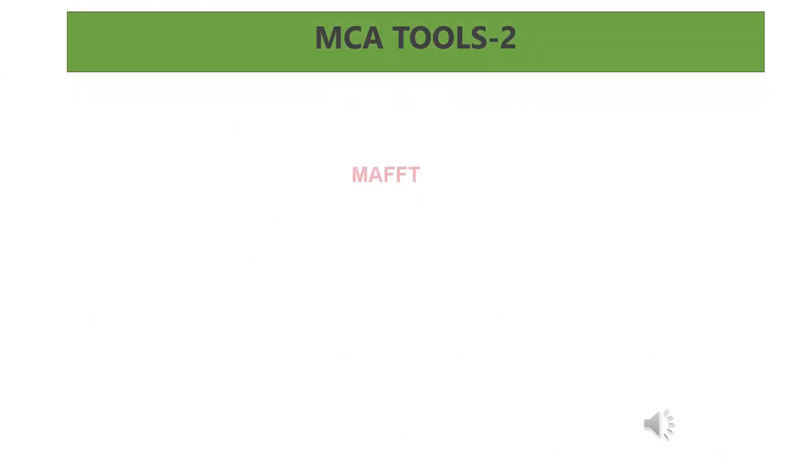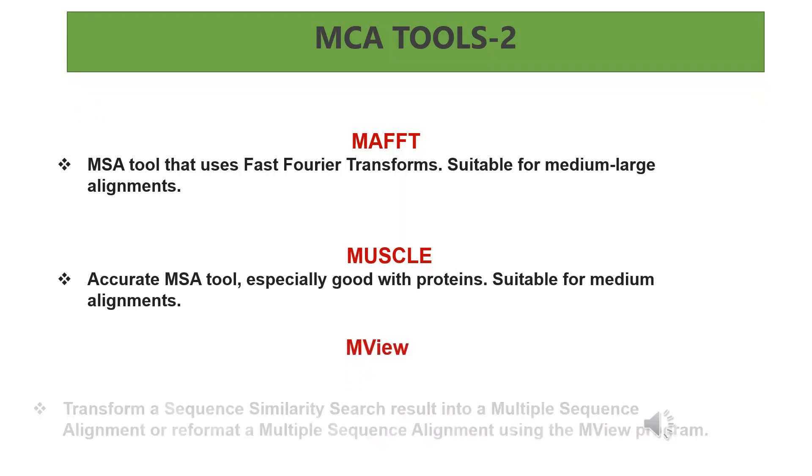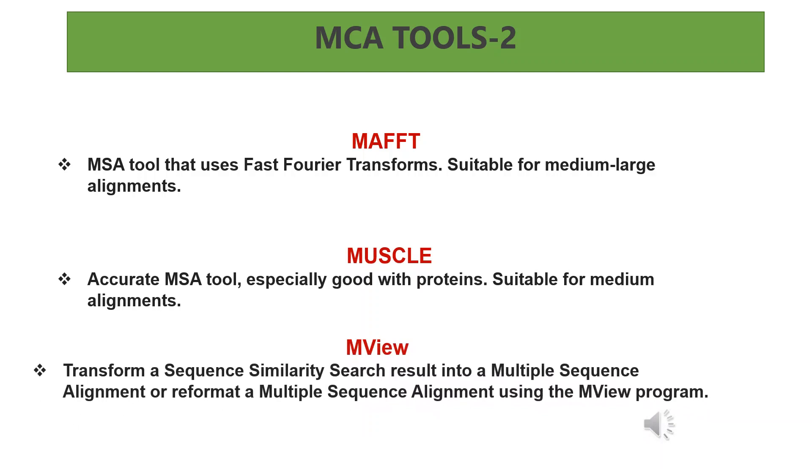The other MSA tools are: 4. Moft. MSA tool that uses fast Fourier transforms. Suitable for medium to large alignments. 2. Muscle. Accurate MSA tool especially good with proteins. Suitable for medium alignments. 3. Mu Transform, a sequence similarity search result into a multiple sequence alignment or reformat a multiple sequence alignment using them view program.